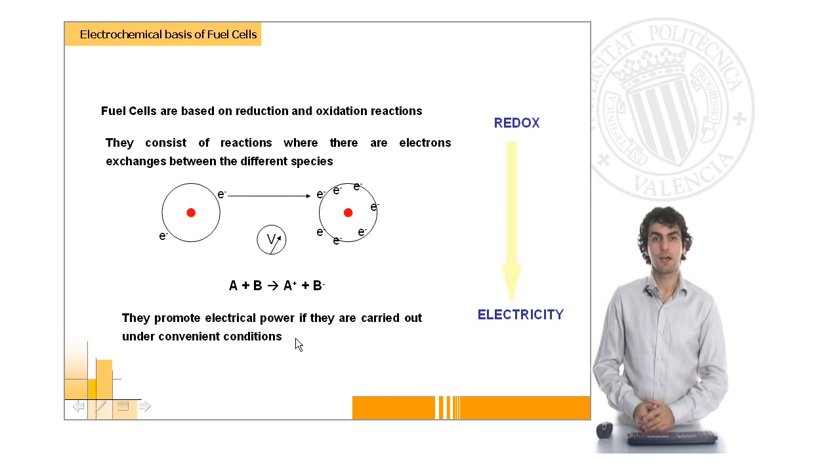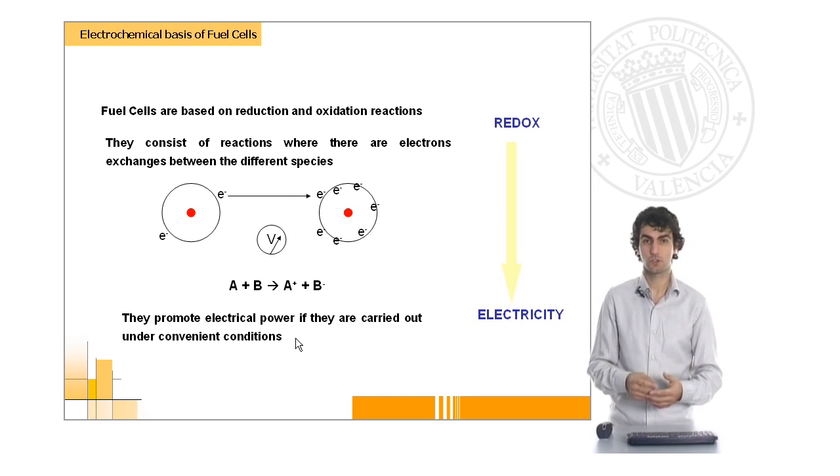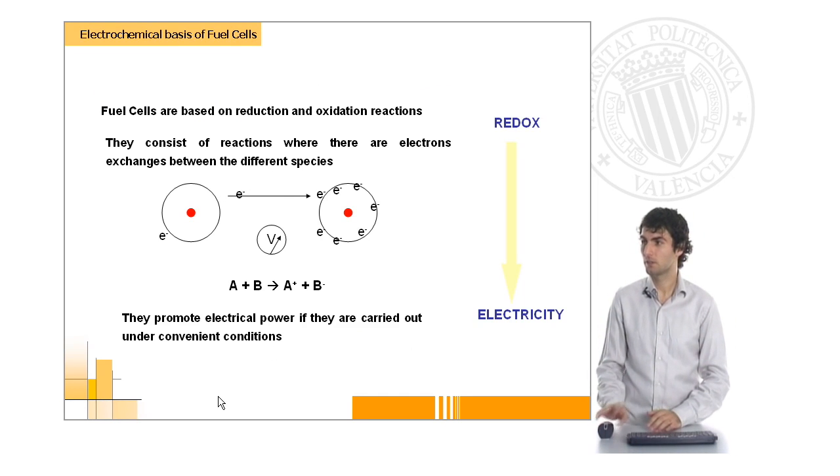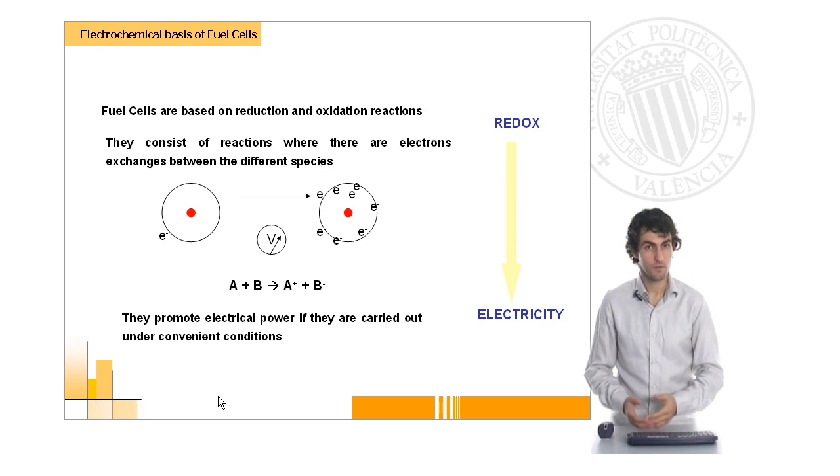In general terms, an oxidation reaction consists of the transfer of electrons between one component and another.